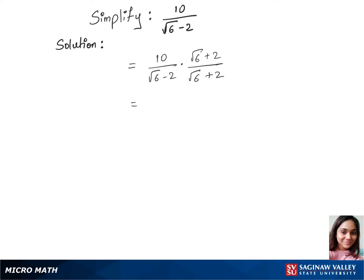Now let's multiply in our next step by writing 10 times root 6 plus 2 over root 6 times root 6 and root 6 times 2 gives us plus 2 root 6 and minus 2 times root 6 gives us minus 2 root 6 and minus 2 times plus 2 is minus 4.